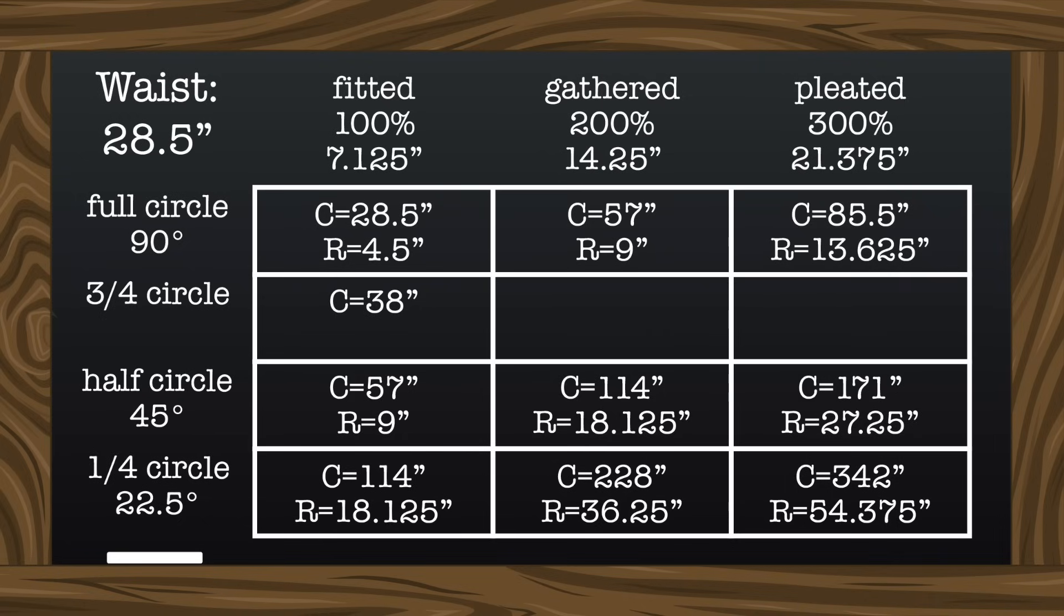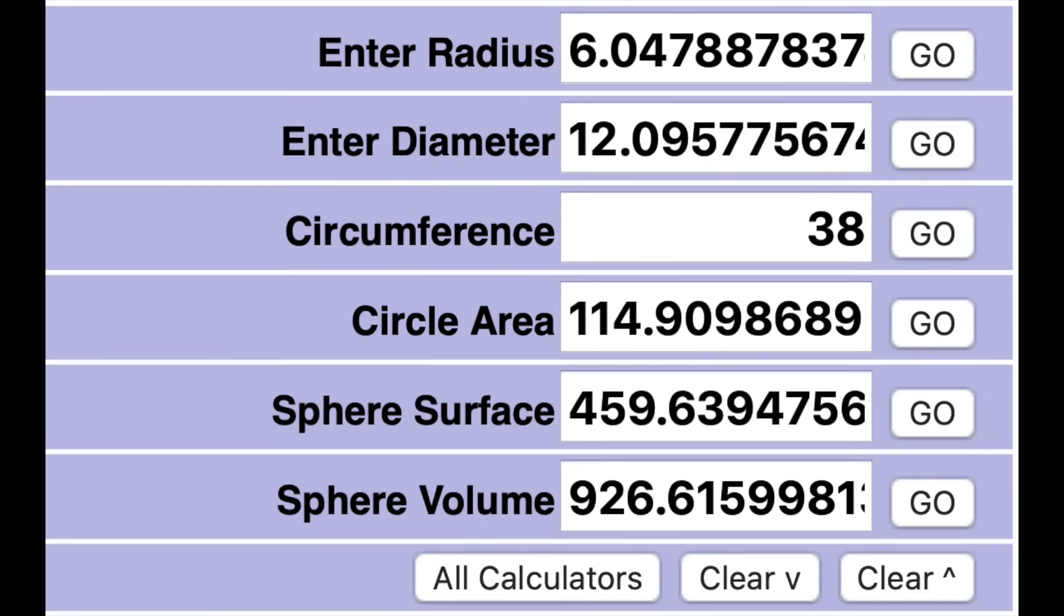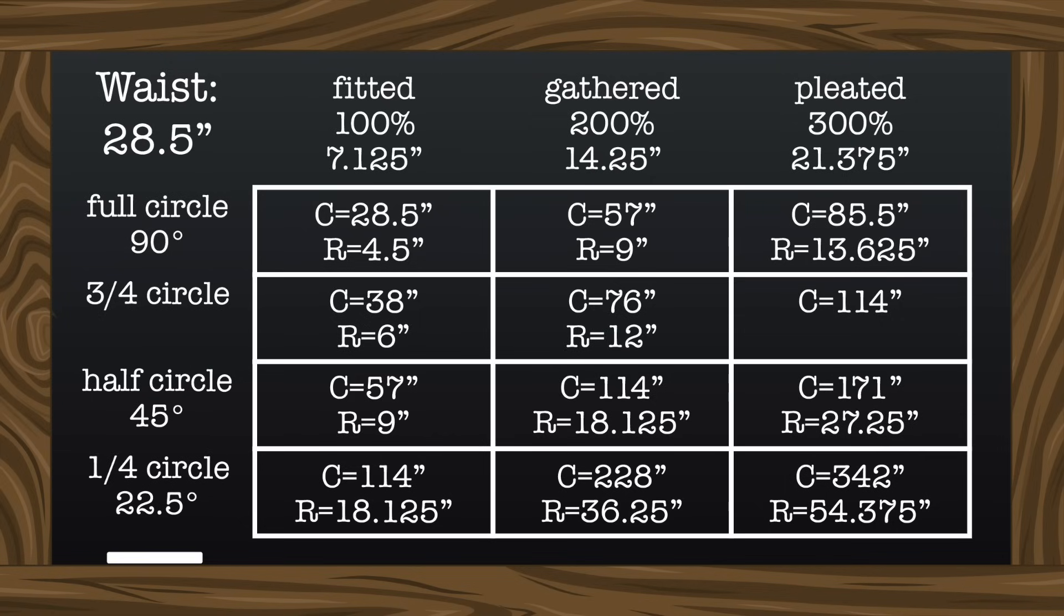So 38 inches can be doubled and tripled, giving us 76 inches and 114 inches. And these measurements can be converted, giving us radii of 6, 12, and 18.125.